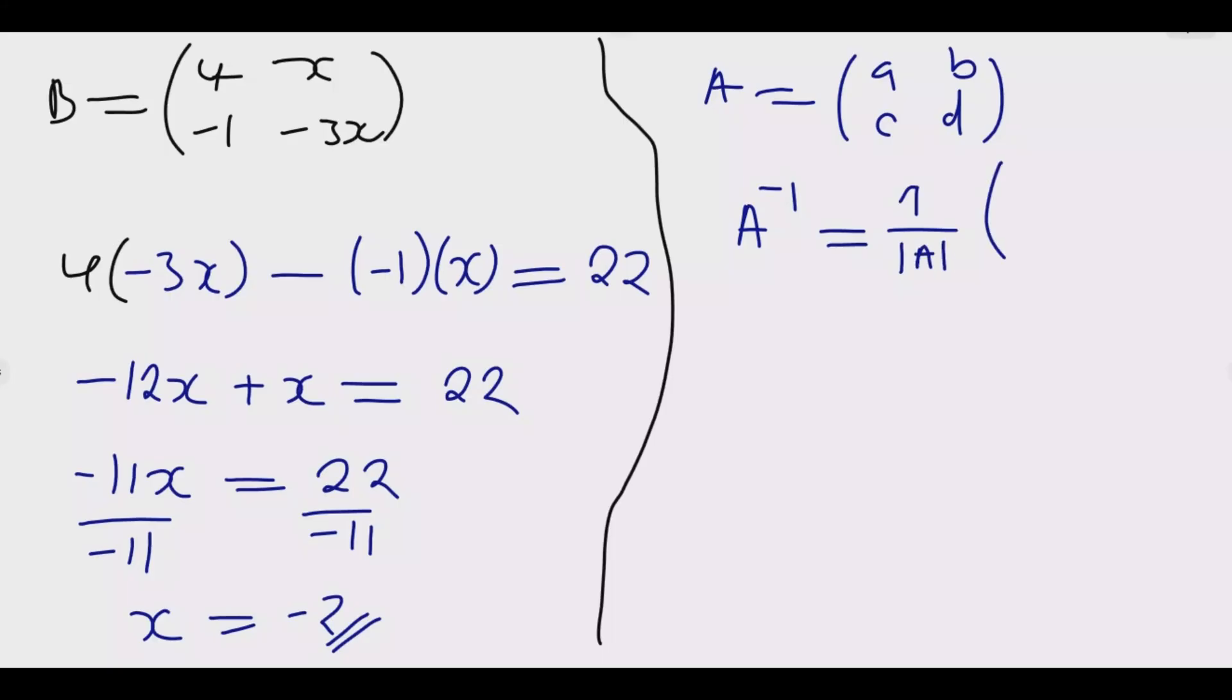Then multiply by, the next is you swap a and d, so this will become d, this is a, then you negate b and c. That's what the inverse is. So now we find the value of x. Let us find matrix B. B equals 4, negative 1, then negative 2 times negative 3 is 6. So we have this matrix. How do you find the inverse? The inverse, which is B inverse, we use the same principle I've explained. The determinant is 22, so it will be 1 over 22.